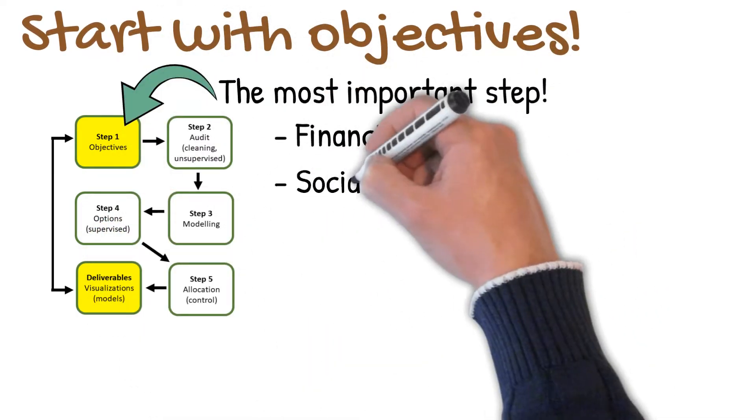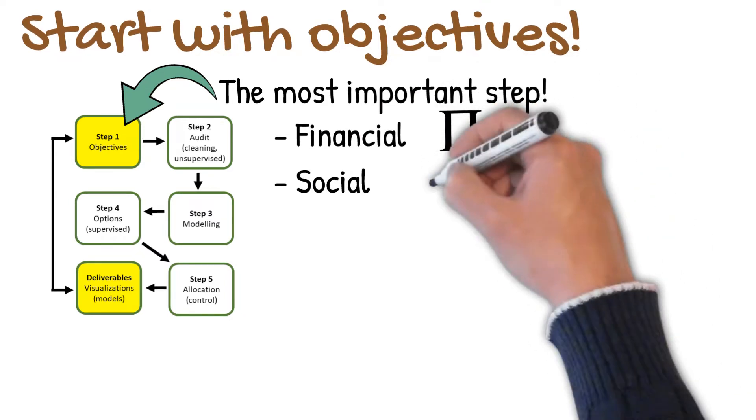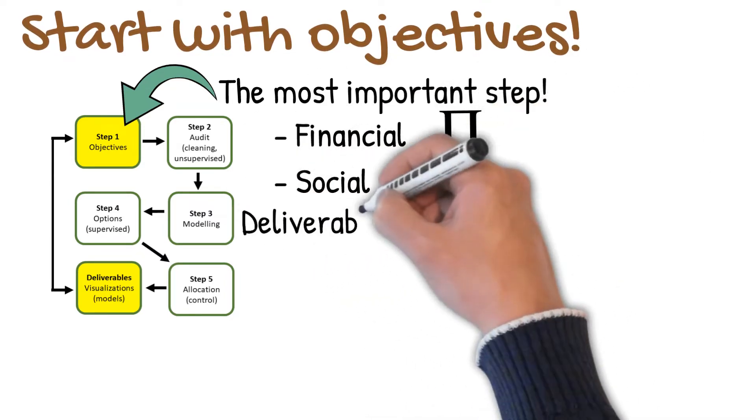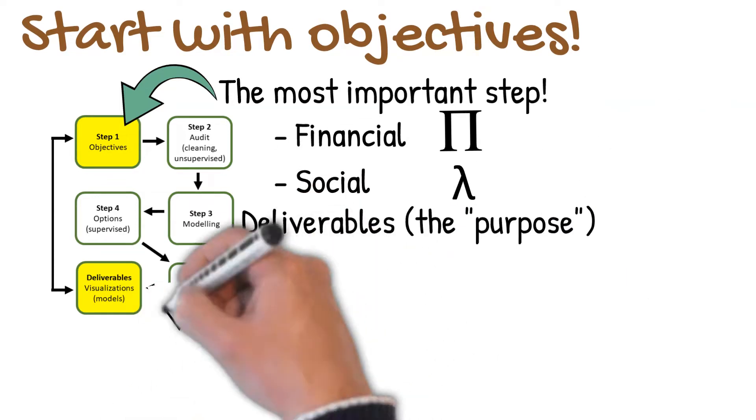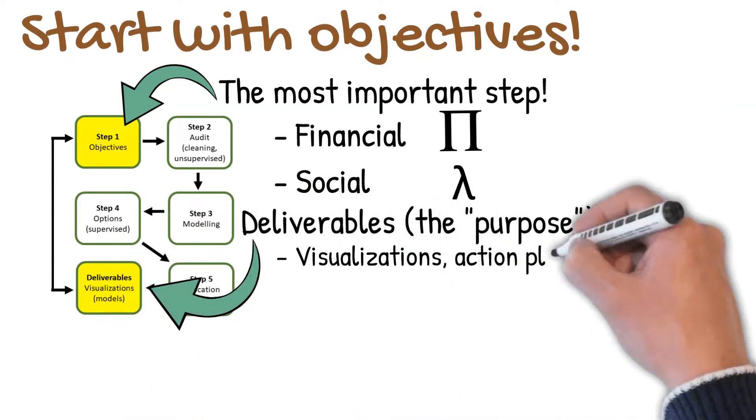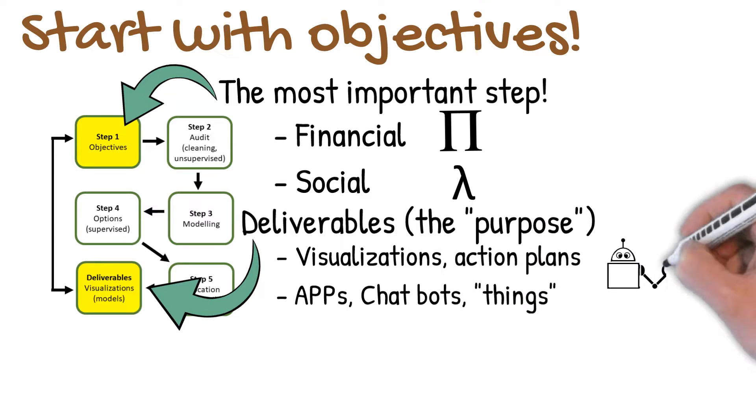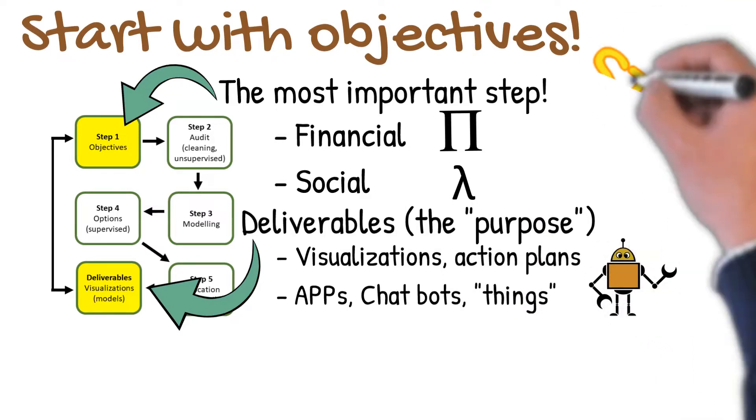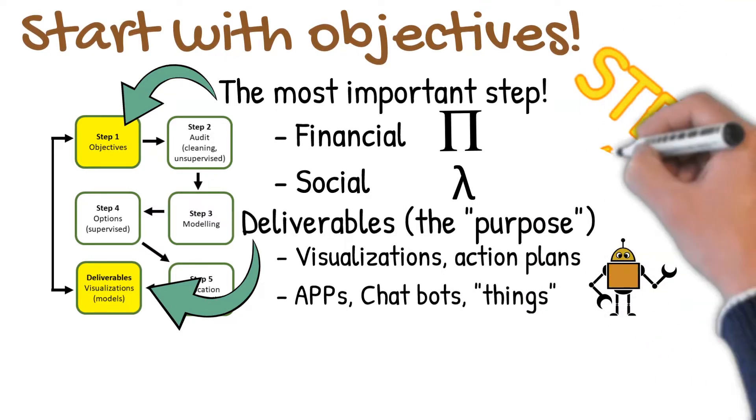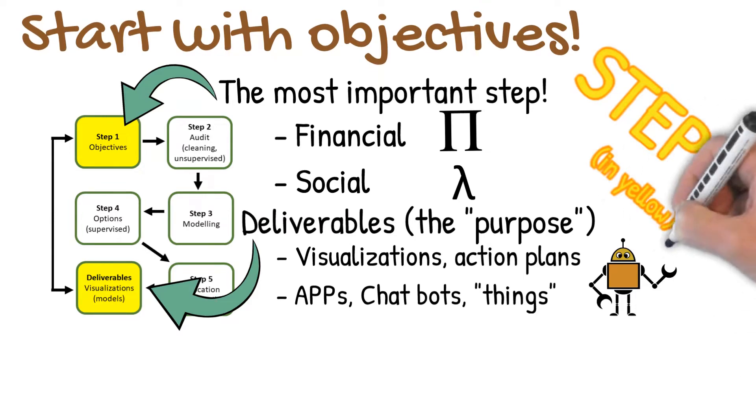There are two aspects of this. One is from the leadership position. They'll be thinking about financial and social objectives. And equally important are the deliverables. That's the thought process of the typical application developer. These are the deliverables that include visualizations, apps, robots, etc.